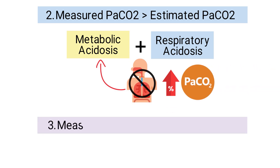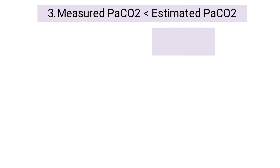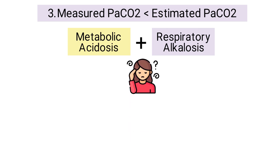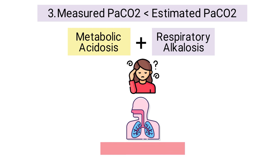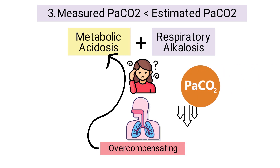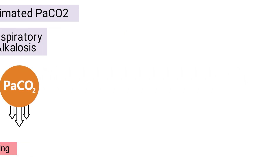The final possibility is when the measured value is less than the estimated value. If the patient's measured PaCO2 is less than the estimated PaCO2, it indicates that the patient has respiratory alkalosis in addition to metabolic acidosis. This occurs because the patient's respiratory system is overcompensating for metabolic acidosis, resulting in a decreased PaCO2.